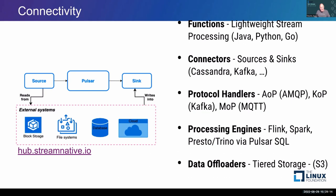We have the same thing for output. Once something gets into a Pulsar topic, maybe you always want it to go to MongoDB, ScyllaDB, a Delta Lake, S3, or Kafka — wherever it is, set it up with a little config file, and it runs for you automatically, just keeps going.